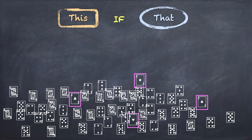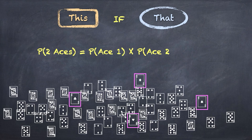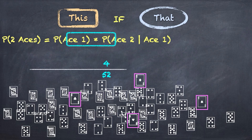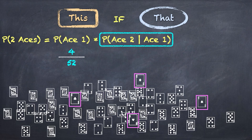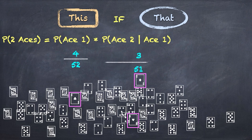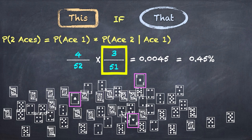In our last example, we're talking about events that are dependent. The question is: what are the chances of being dealt two aces from a deck of cards? In this scenario, an ace is dealt but not put back into the deck — no replacement — so the deck has changed before the second card is dealt. The probability of getting two aces is the probability of getting the first ace times the probability of getting the second ace given that we got the first ace. For the first ace, there are four possible favorable outcomes out of 52 cards, so the probability is four over 52. Now there are only three aces left and 51 cards in the deck, so the chances of getting the second ace is three over 51. The probability of getting two aces is four over 52 times three over 51, which is 0.0045.